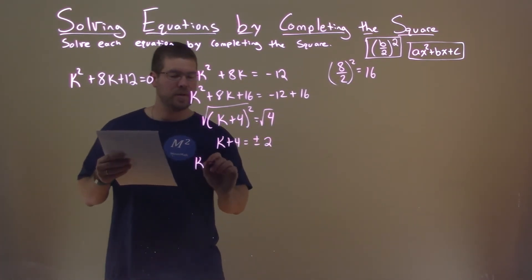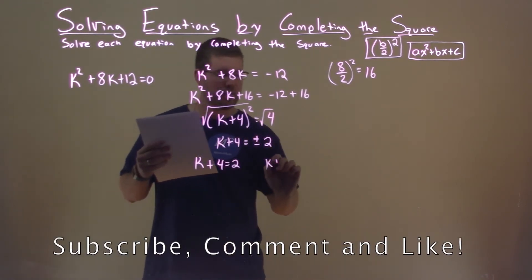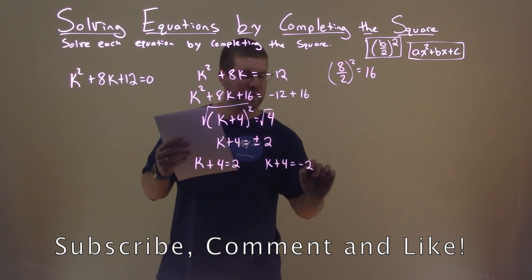We can break this out to be two separate equations to solve. So k plus 4 equals a positive 2, and k plus 4 equals a negative 2.